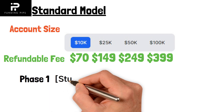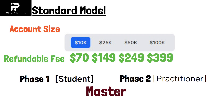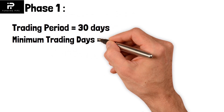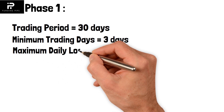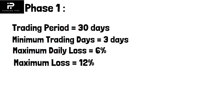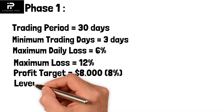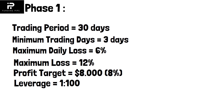The first phase is the Student phase, second is Practitioner, and third is the Master account. In Phase 1, the trading period is 30 days, minimum trading days is 3 days, maximum daily loss is 6% — calculated from the highest of equity or balance at the start of the day. Maximum loss is 12%, fixed and static, calculated from your initial balance, with the stop-out level remaining fixed throughout. The profit target is 8% and leverage is 1:200.